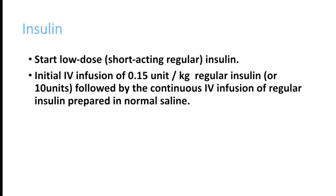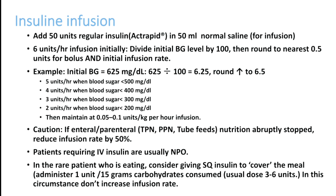Insulin should be diluted in normal saline. Add 50 units of regular insulin — normally we use Actrapid — in 50 ml normal saline for infusion. For a 50 kg patient, the infusion is approximately 7.5 units. For example, if the patient has a blood sugar of 625 mg/dL, the initial infusion rate can be calculated as 625 divided by 100, giving approximately 6.25 — rounded to 6 or 6.5 units per hour for the first hour.